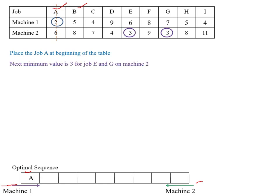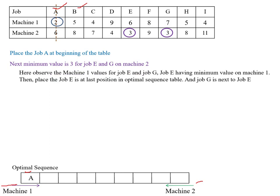Then delete job A. The next minimum value is 3 for job E and job G on machine two. If two jobs have the same minimum value on the same machine, we observe the processing time on the other machine. Here we observe the machine one values for job E and job G. Job E has the minimum value on machine one, so place job E at the last position in the optimal sequence table.